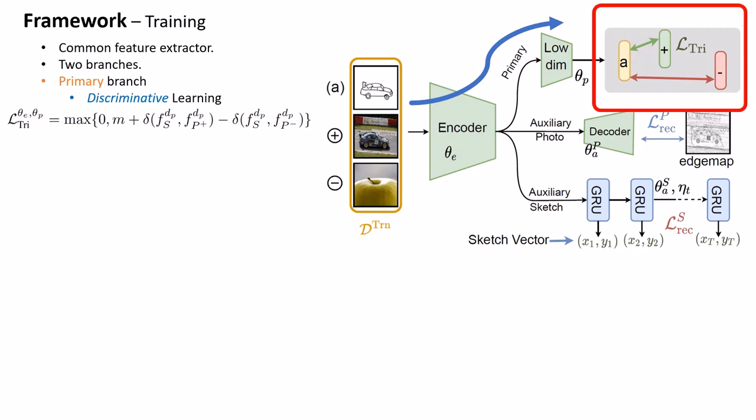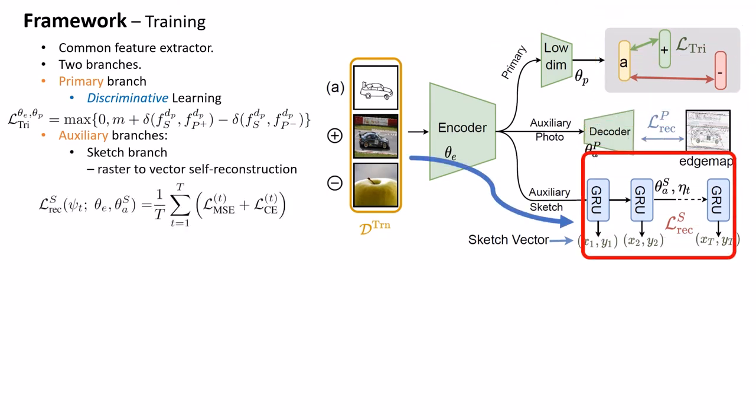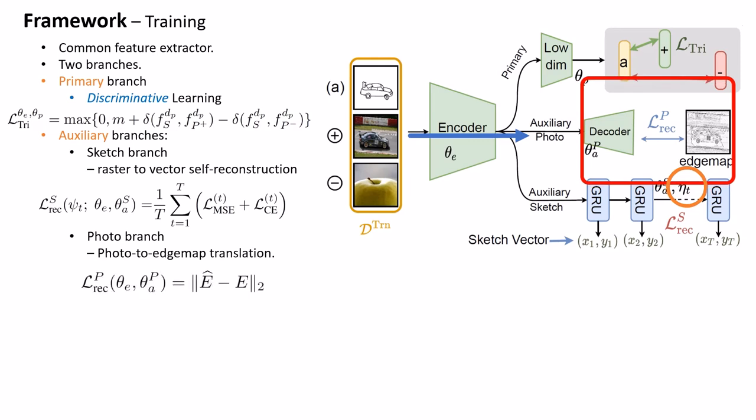There are two auxiliary branches, one for each modality, which are also used during inference. The sketch vector branch feeds the extracted feature into a GRU, which decodes them to a five-tuple set, each indicating a sketch stroke, where the first two indicate coordinates and last three elements indicate the pen state. Importantly, we attach a learnable weight to every stroke that decides how important it is for reconstruction with respect to the primary objective. In the photo branch the extracted photo feature is reconstructed to its corresponding edge map via a convolutional decoder over MSE loss.